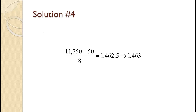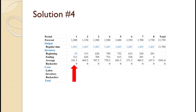We need 11,750 over the 8 periods but we already have 50 so we only need to produce 11,700. That divided by 8 equals 1,462.5. We round that up and we will be producing 1,463. In period 1, we need 1,200 but produce 1,463 so inventory goes up from the beginning inventory of 50 to 313. That yields an average inventory of 181.5.